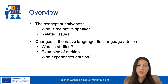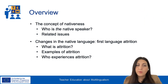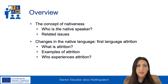In this first screencast, we will discuss the concept of nativeness, along with the issues related to the characteristics and terminology traditionally associated with native speakers. We will then examine the issues surrounding the supposed stability in the native language by introducing the phenomenon of first language attrition, explaining what attrition is, providing examples, and discussing who is affected.